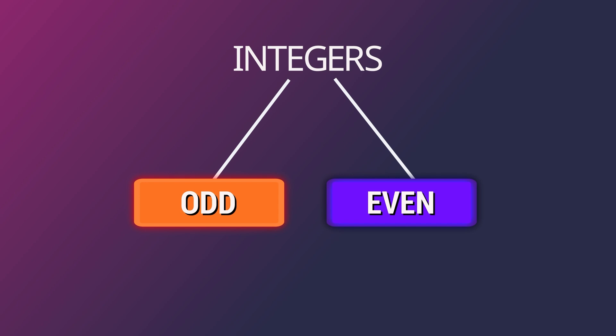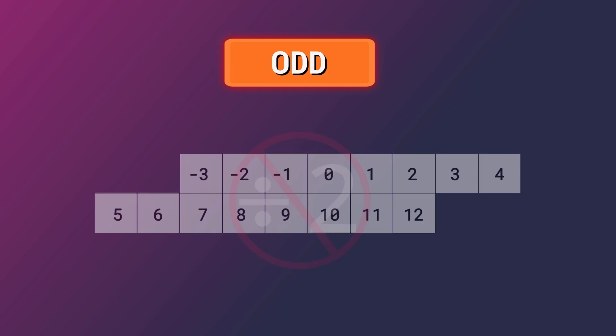Starting with odd numbers. Odd numbers are all integers that are not divisible by two. They can be both positive and negative, for example: negative three, negative one, one, three, five and seven.